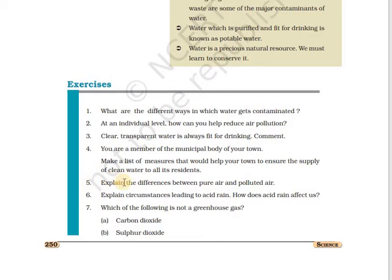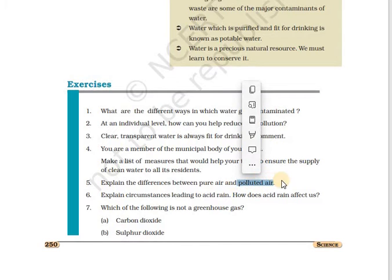Fifth question: explain the differences between pure air and polluted air. Pure air is when there are no pollutants — the air is fresh, and you can find pure air when you go to parks early in the morning where you don't feel any choking or coughing. Whereas polluted air is mixed with different pollutants — people might have sneezing, allergies, and you won't have a feel-good factor. These are the differences between pure air and polluted air.